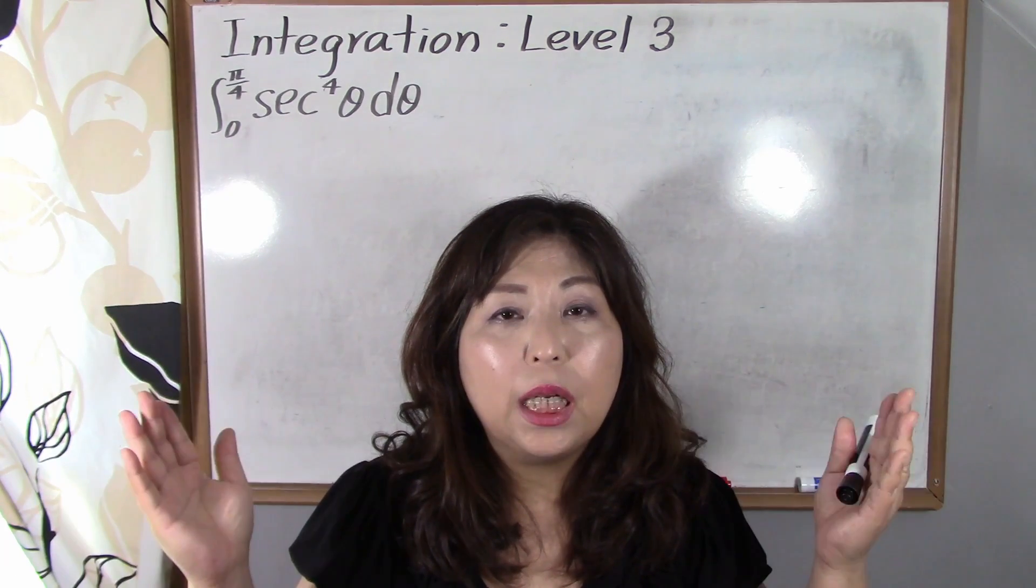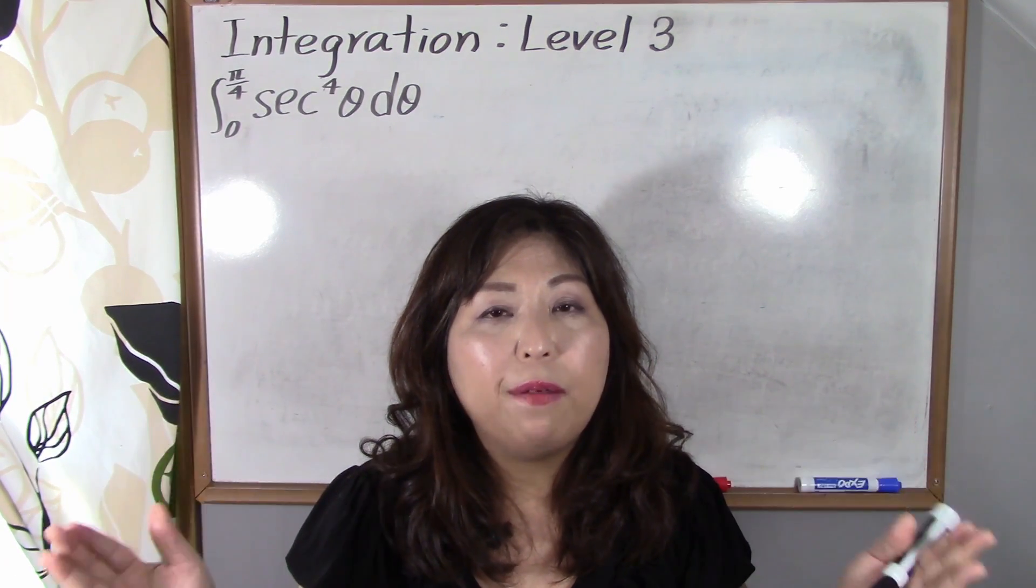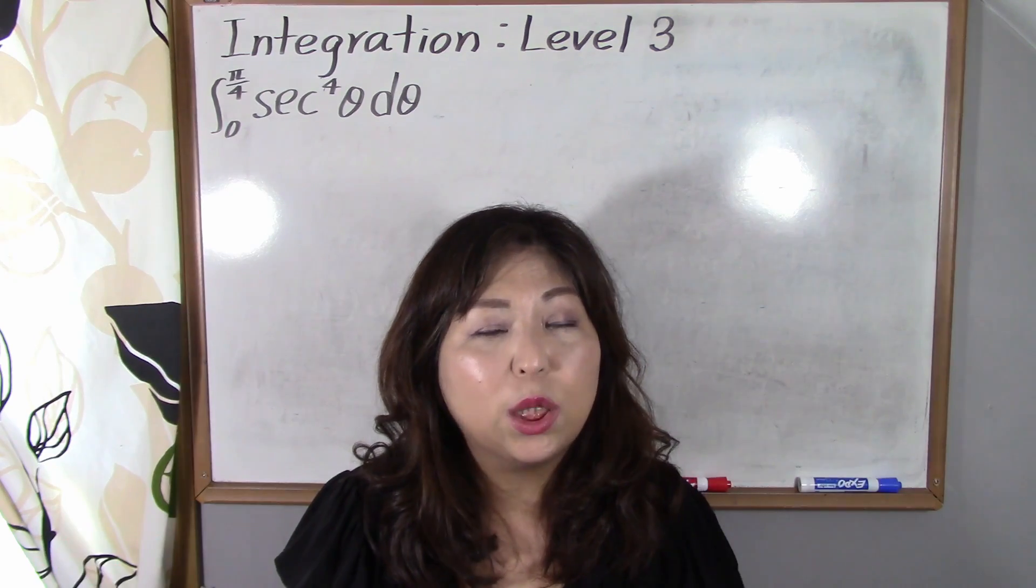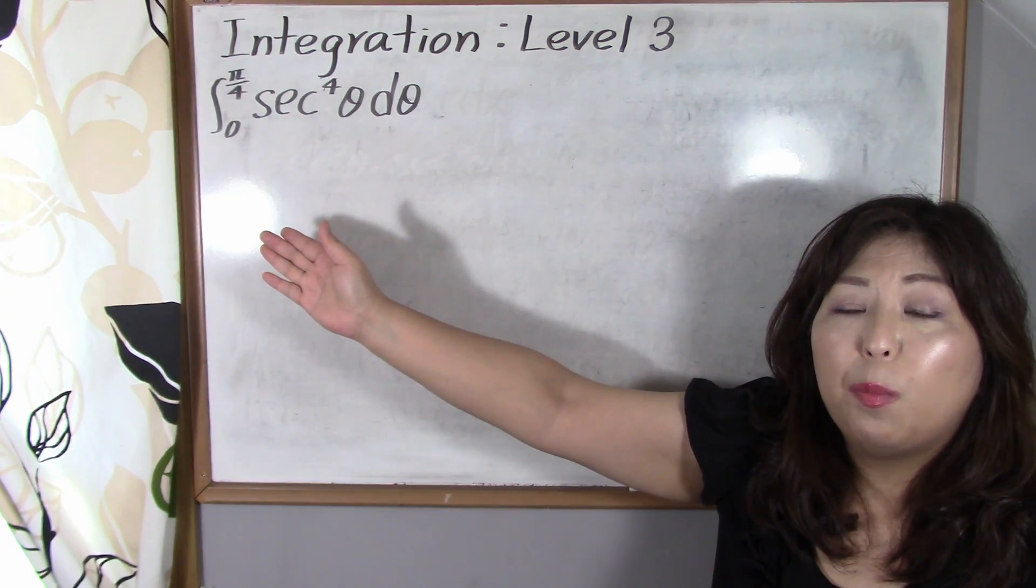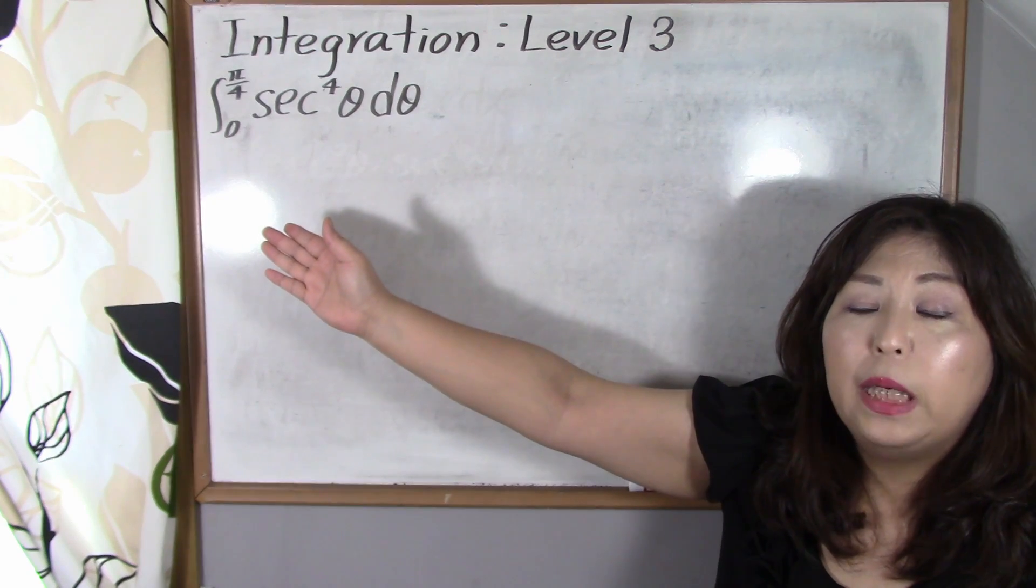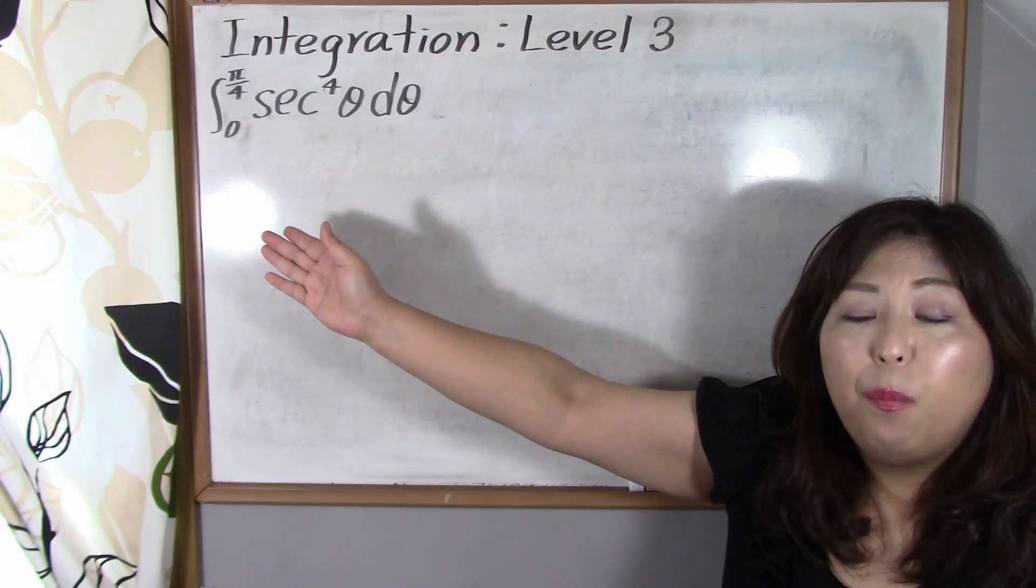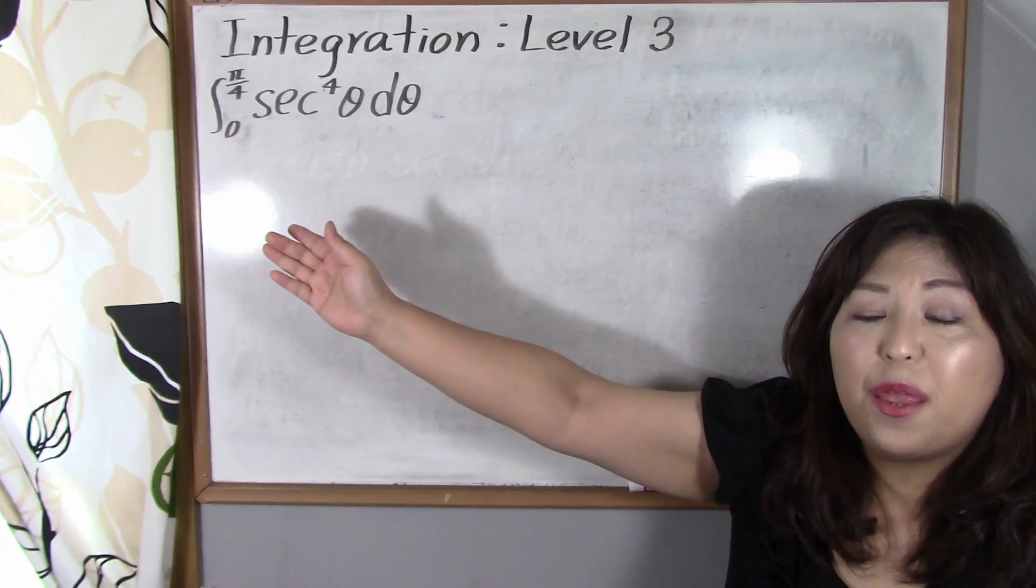So today actually it's gonna be a definite integral. So here's the problem: Integral from 0 to pi over 4 of secant to the 4th power of theta d theta.